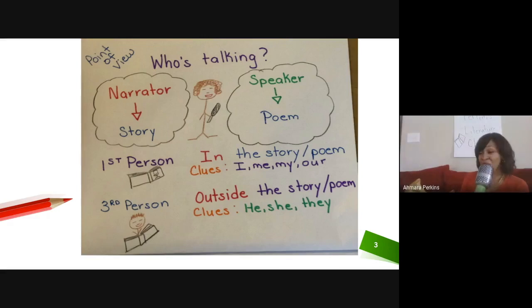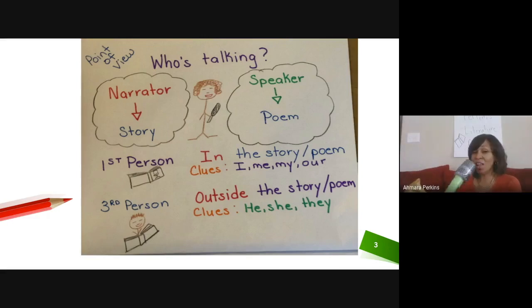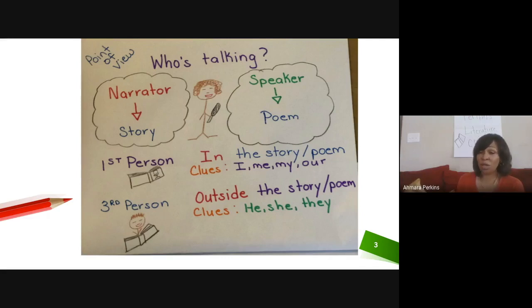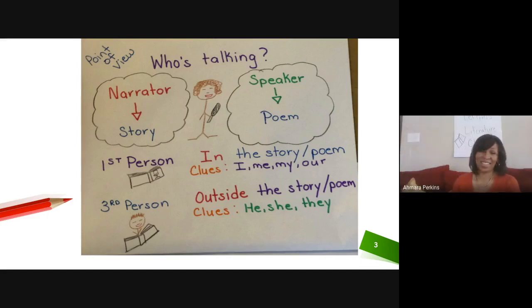Then we have third person point of view, where the person telling the story or poem is outside of the text. They're talking about someone else and they use pronoun clue words: he, she, or they. So that's our review of point of view when we think about who's talking.